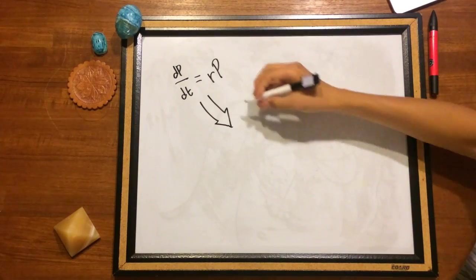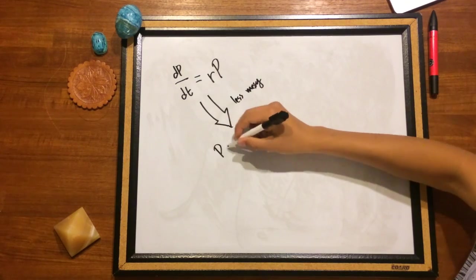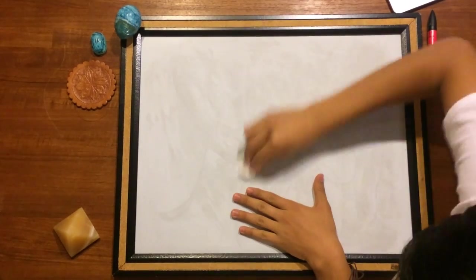From this, the function for population itself is easily derived. P equals ae to the rt. In this situation, humans are the exception to the rule.